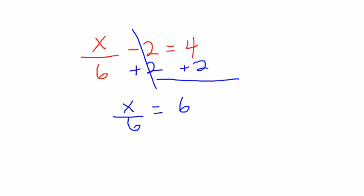Now, on the left-hand side, I have x over 6, which is the same thing as x divided by 6. So we are going to think what is the opposite of dividing by 6? Well, that would be multiplying by 6 on each side. So on the left, we have 6 divided by 6, which gives us 1. We are left with x equals 6 times 6 is 36. So x equals 36 is our solution.